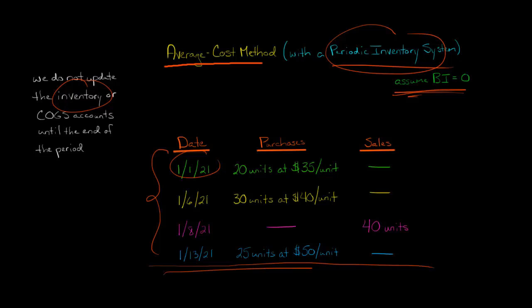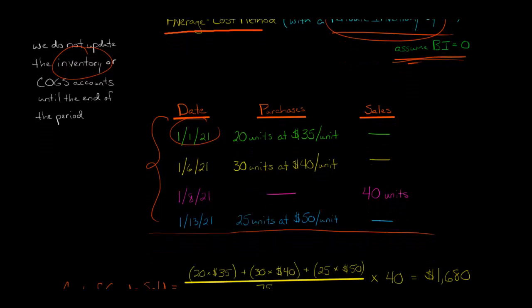The period has ended here, and so now that's the point where we're going to go and say, all right, let's calculate a weighted average cost of all these purchases. Because we see that these purchases were $35, these were $40, these were $50. We can calculate a weighted average cost for all of those.